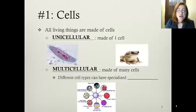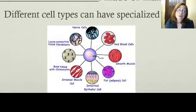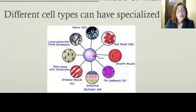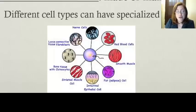We call that cell specialization — different cell types can have different functions. For example, your red blood cells are required to carry oxygen through your blood, which is necessary for acquiring and using energy. Your bone tissue helps grow your bones and allows for calcification that gives your body structure. Whereas your intestinal epithelial cells aid in digesting your food, processing and absorbing nutrients. Each of those cell types can have different functions, and these are just a few found in our human body.